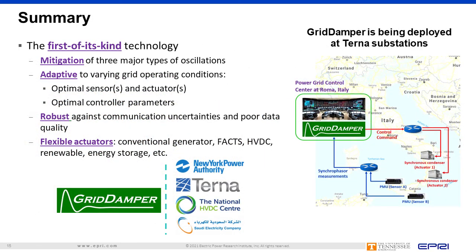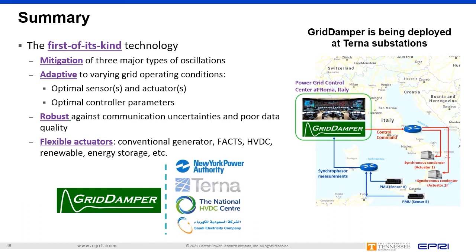Grid Damper is the first of its kind technology that can mitigate all three major types of oscillations while also having the adaptive capability to handle varying grid operating conditions. It is robust against communication uncertainties and has the flexibility to work with various kinds of actuators. Grid Damper has been successfully implemented on hardware and tested on four realistic power grids: the New York Power Authority in the US, Terna in Italy, the National HVDC Center in the UK, and the Saudi Electricity Company in Saudi Arabia. Field deployment is happening right now in the control center of the Italian transmission system operator, Terna.